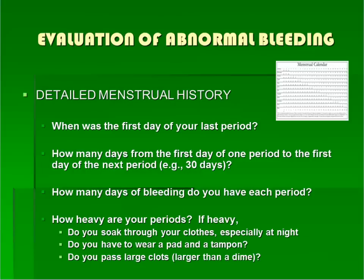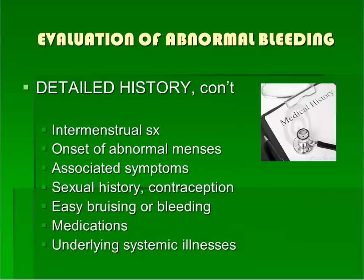How do we evaluate patients who present with an unknown cause of abnormal bleeding? Always begin with a detailed history, including a menstrual history. Important questions to ask are listed on this slide. Here are more important topics to cover during the patient history. The answers to these questions can provide clues to the etiology of abnormal bleeding.